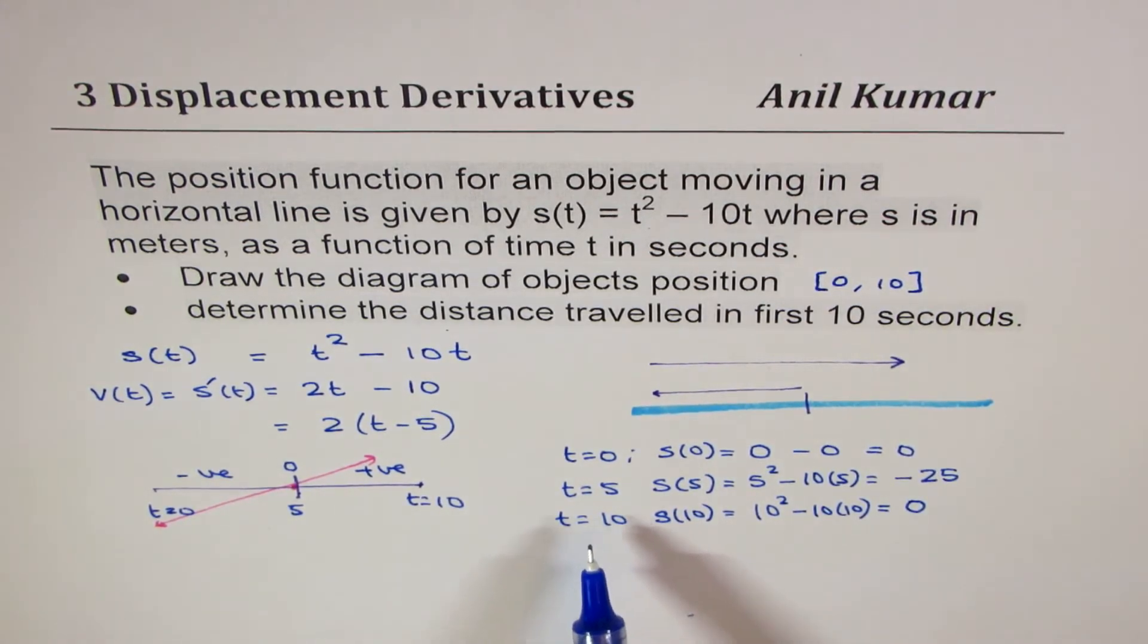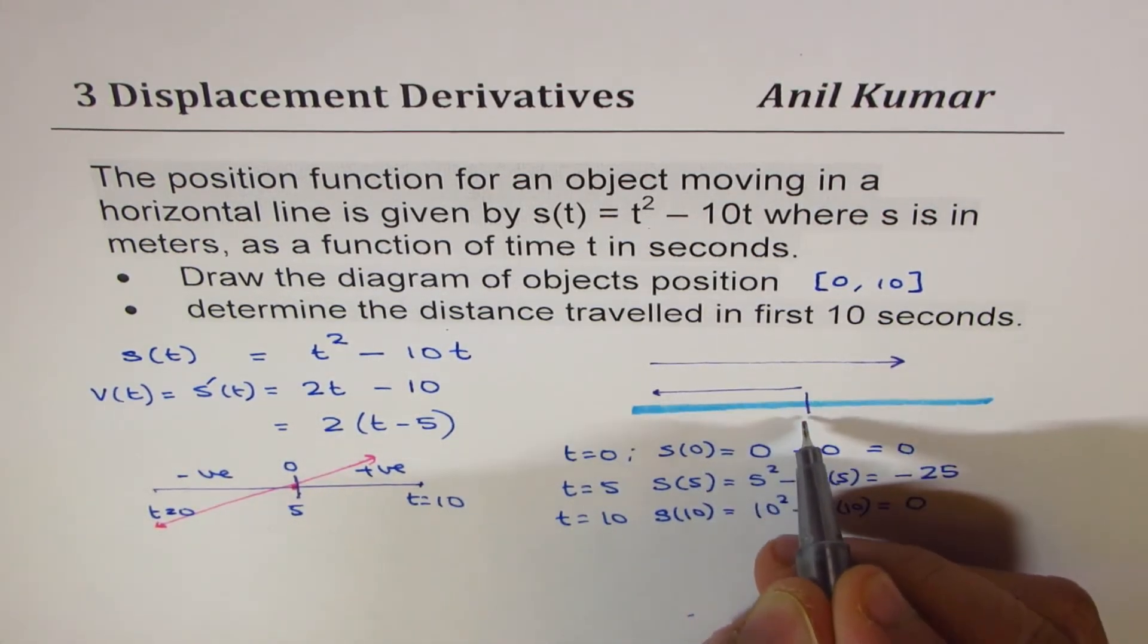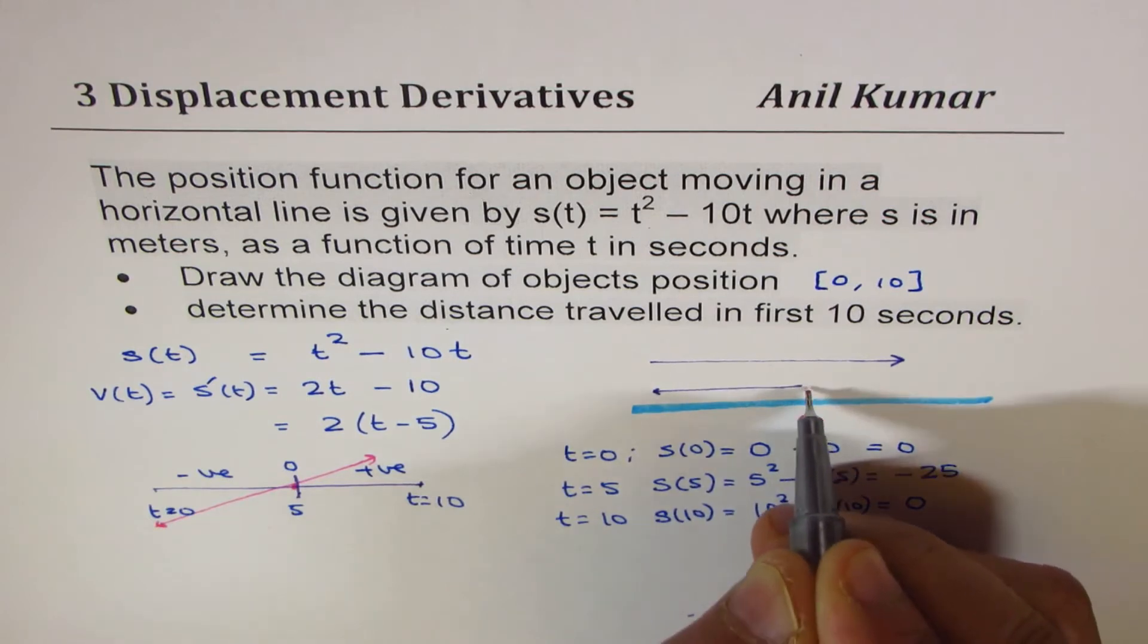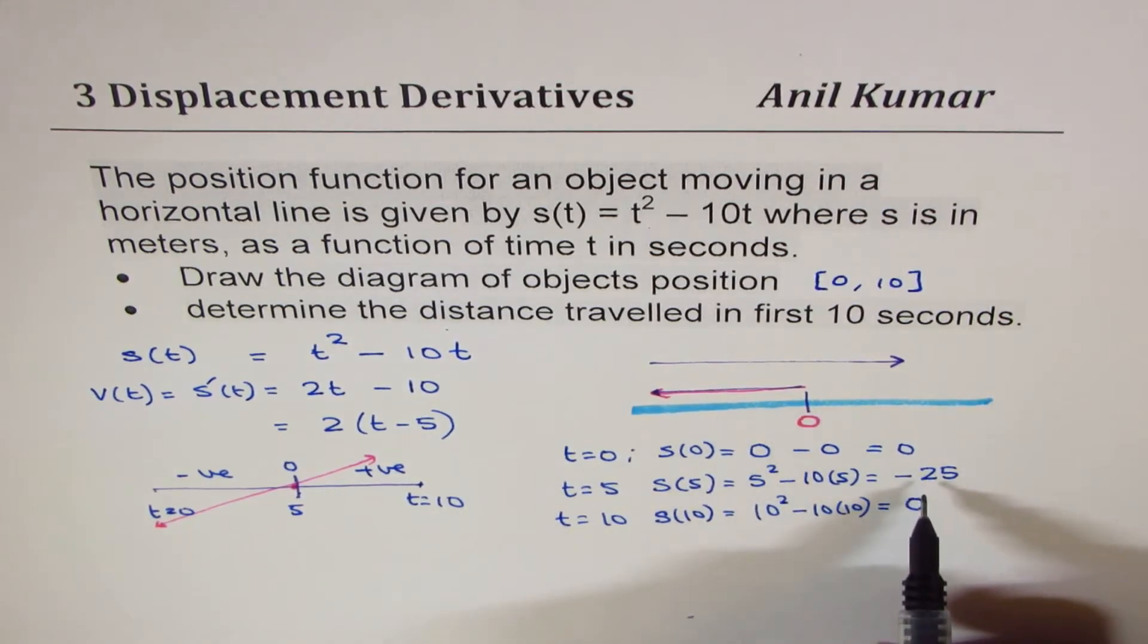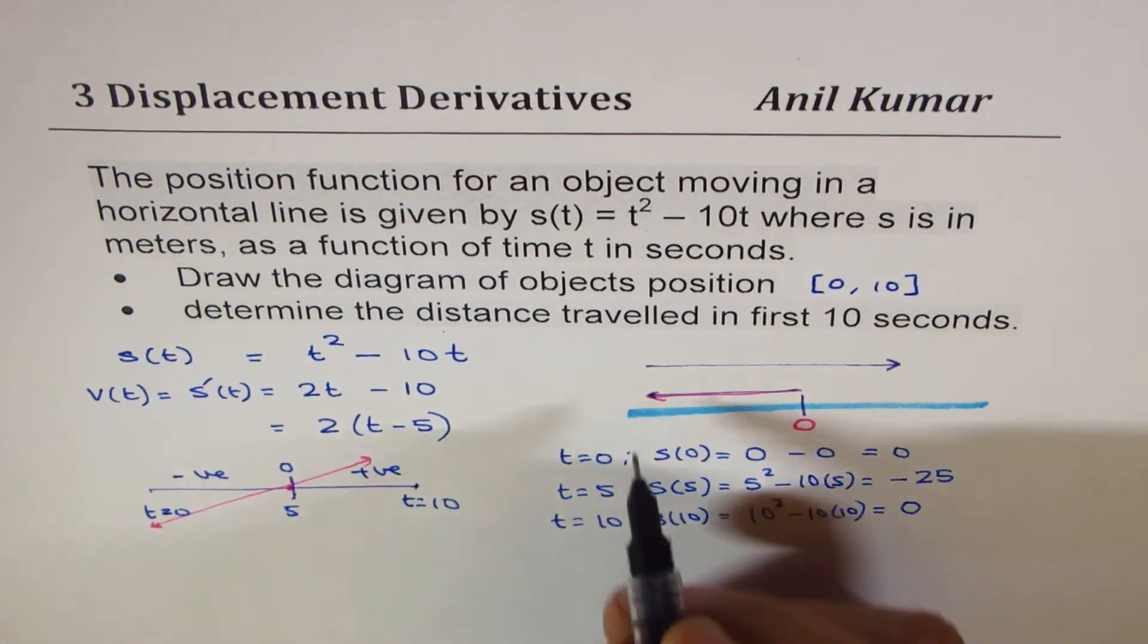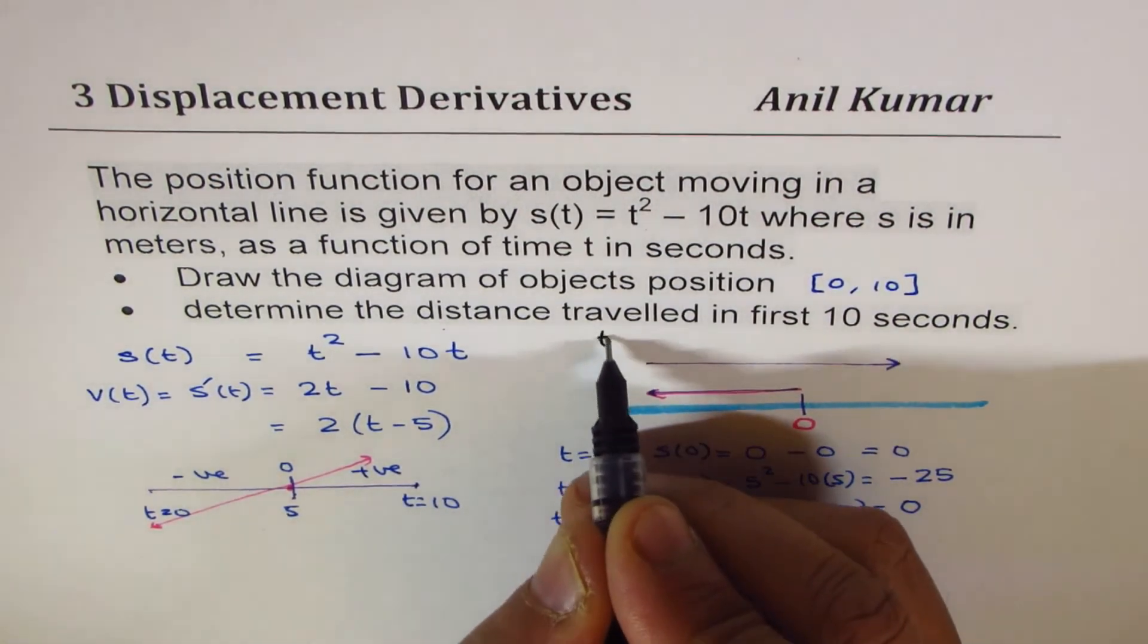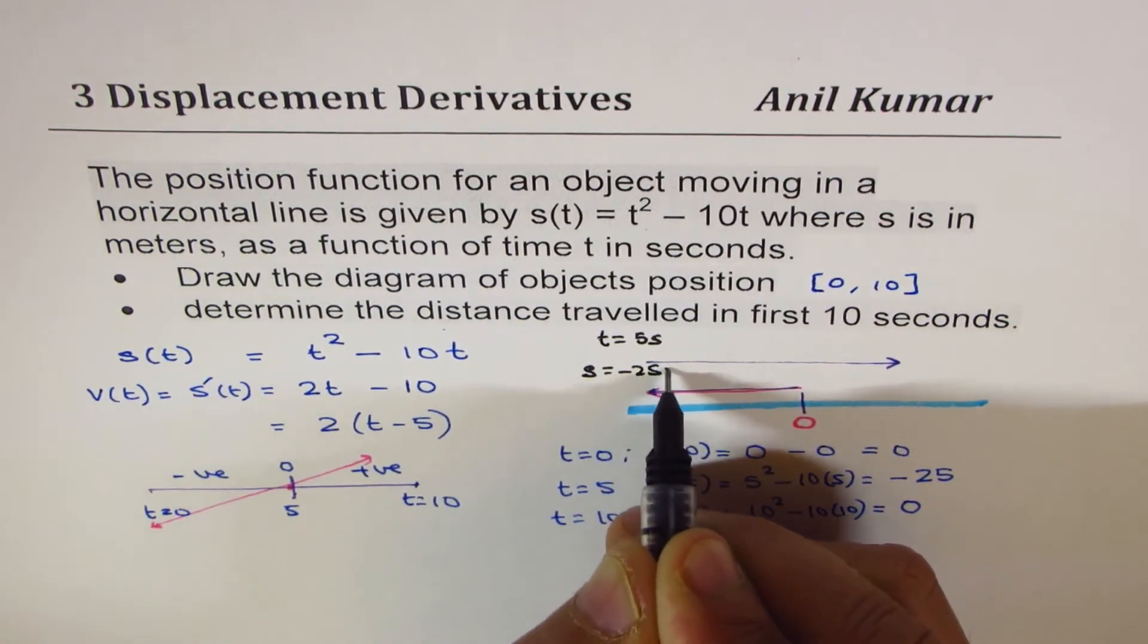So after 10 seconds, actually the object returns back to the position where it started. So basically, we can summarize that in the first 10 seconds, the object moves from the initial position, let me call this S0 the initial position, moves left and covers a distance of 25. That minus displacement shows left side movement. So at this position, t is equal to 5 seconds, and s is equal to minus 25 meters.